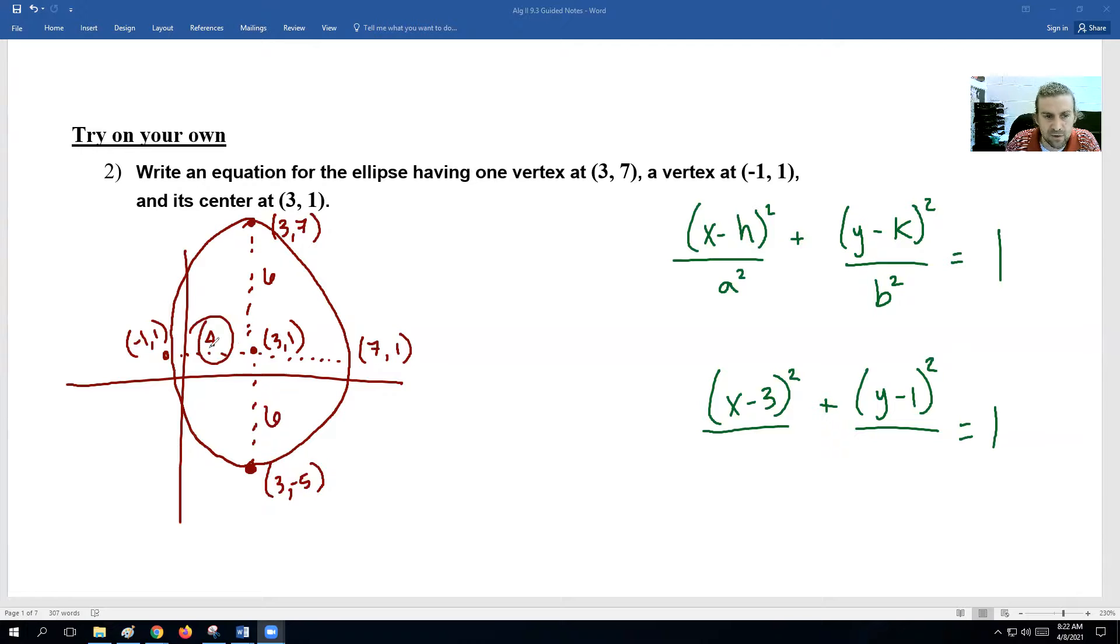The x number, we're going to take that 4 and square it. And that would be 16. And then the y-axis, we're going to go ahead and take the 6, which is our up and down part, and square that 36. All right, so there's the equation on the ellipse.